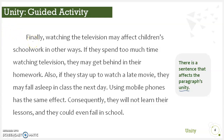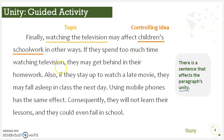This is a paragraph from an essay that discusses the bad influence of watching TV on children. The topic sentence is: 'Finally, watching the television may affect children's schoolwork in other ways.' The topic here is watching TV and the controlling idea is children's schoolwork. Looking at the supporting details: 'If they spend too much time watching television, they may get behind in their homework.' The ideas here are related to the topic and the controlling idea, so this sentence is relevant to the topic sentence. Also, 'if they stay up to watch a late movie, they may fall asleep in class the next day' — this supporting detail also has ideas related to the topic sentence.